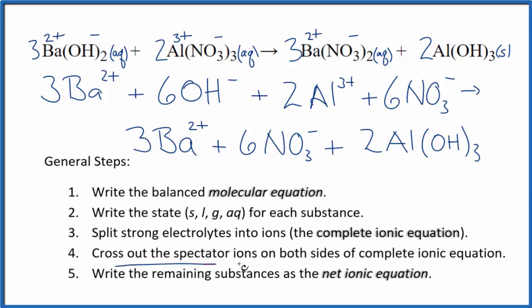Now we can cross out the spectator ions. They're on both sides of the complete ionic equation. I see I have three barium ions here in the reactants, three in the products right here. Those are spectator ions. We can cross those out.